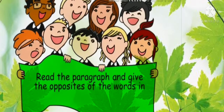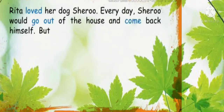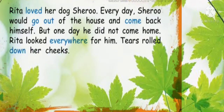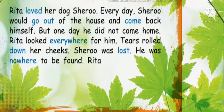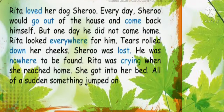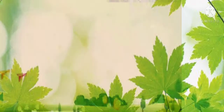Next question: read the paragraph and give the opposites of the words in blue. Here you have a paragraph: 'Rita loved her dog Shiru. Everyday Shiru would go out of the house and come back himself. But one day he did not come home. Rita looked everywhere for him. Tears rolled down her cheeks. Shiru was lost, he was nowhere to be found. Rita was crying. When she reached home she got into her bed. All of a sudden something jumped on her — it was Shiru! Rita was very happy.' Now write the opposites of the blue words.